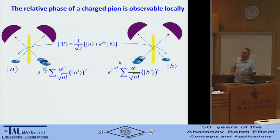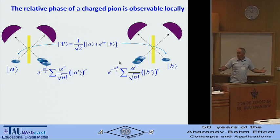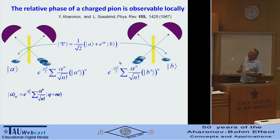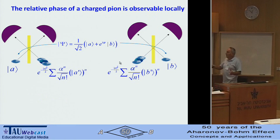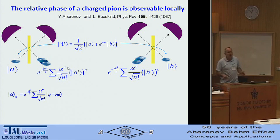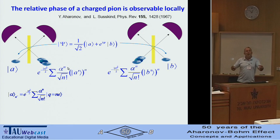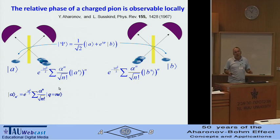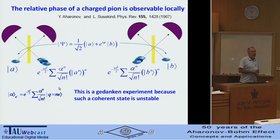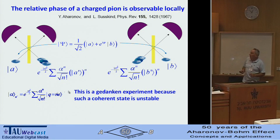The first experiment was for photons, but that's not the most interesting case — we're talking about the Aharonov-Bohm effect, which is for charged particles. If we use pions, that conceptually is the Aharonov-Bohm effect. The relative phase of a charged pion is observable locally. Some people say it's problematic because of superselection rules — you cannot have a coherent state with different charge. But Yakir wrote a paper with Larry Susskind showing no problem: we can find the relative phase between different charge states, and the superselection rule is really an illusion. Though it's only a Gedanken experiment because the coherent state is unstable due to strong electromagnetic interaction.